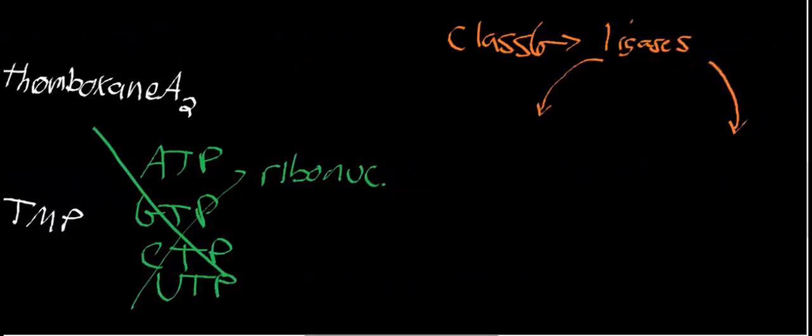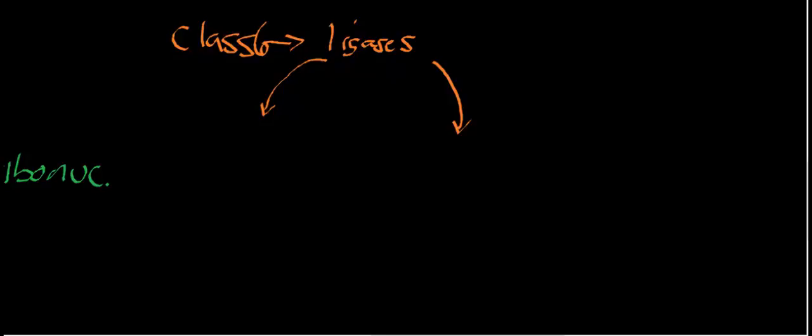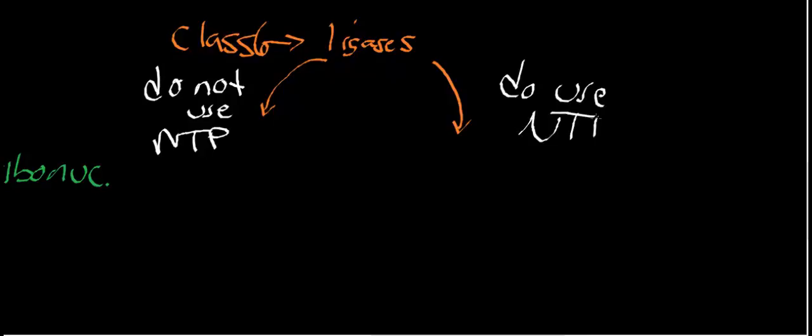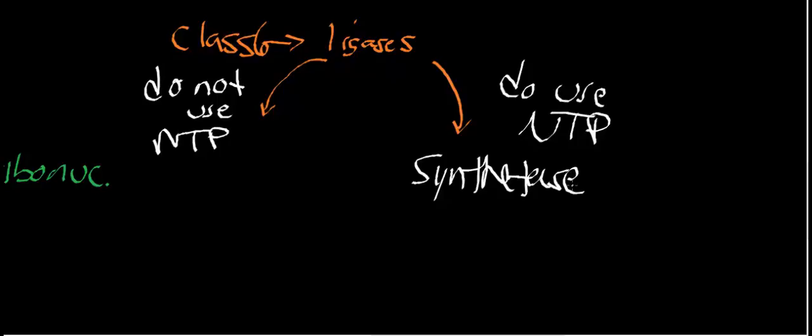Synthetases are class 6 enzymes — they're ligases. When we talk about ligases, we can generally break them into two groups: ones that do not use a nucleoside triphosphate, and ones that do. The group of ligases that do use a nucleoside triphosphate we call synthetases. So all a synthetase is, is a ligase that uses a nucleoside triphosphate. If it doesn't use a nucleoside triphosphate, we just keep the term ligase.